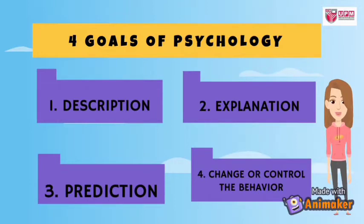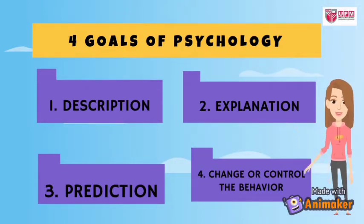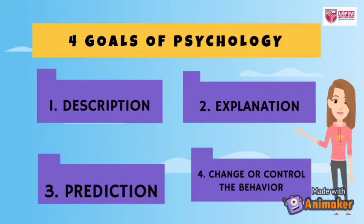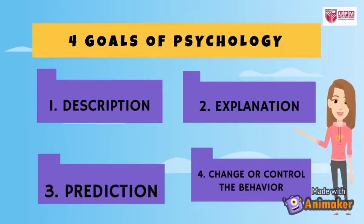There are four goals of psychology. First is description. Second is explanation. Third is prediction. And fourth is to change or control behavior.